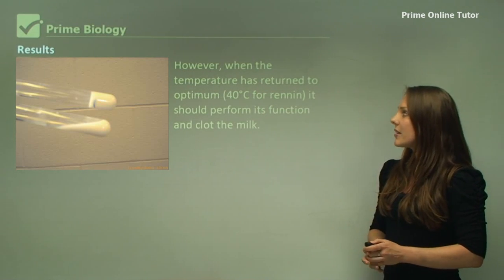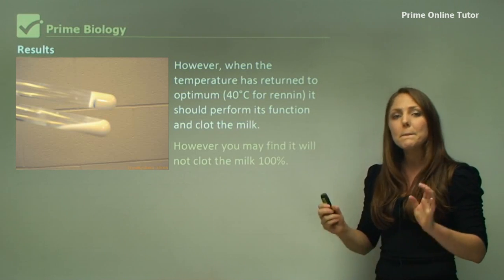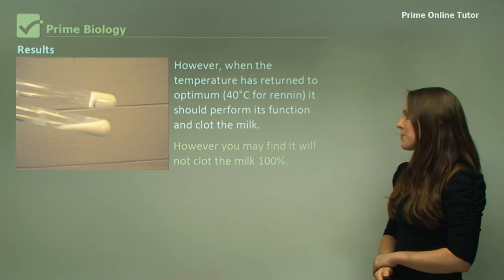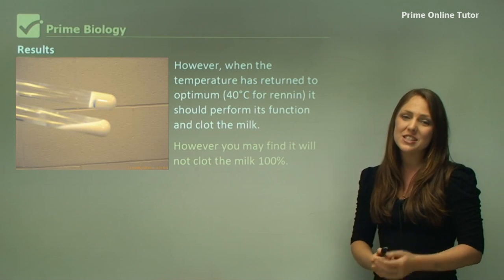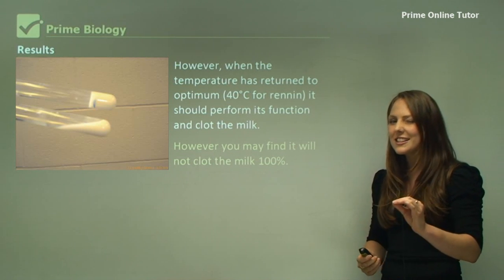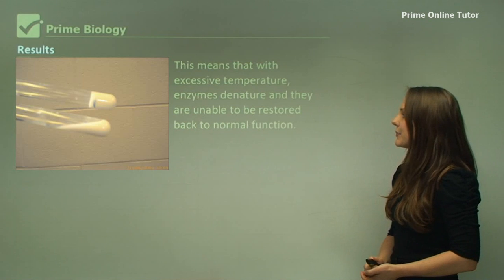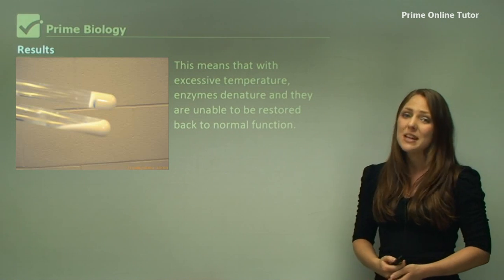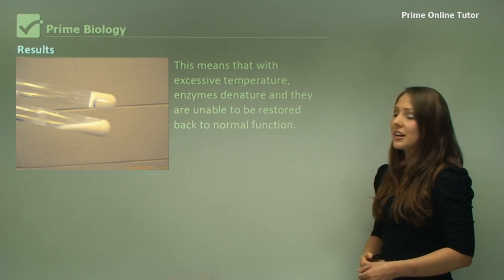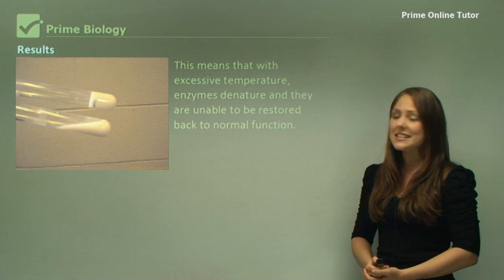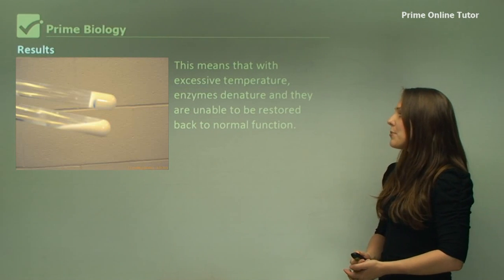It may not clot the milk at a hundred percent, so it may clot it at just 85 percent. You might find there's a little bit of milk there that's still liquid. This means that with excessive temperature, enzymes denature. Excessive heat, they will denature and permanently denature. They're unable to be restored back to normal function.